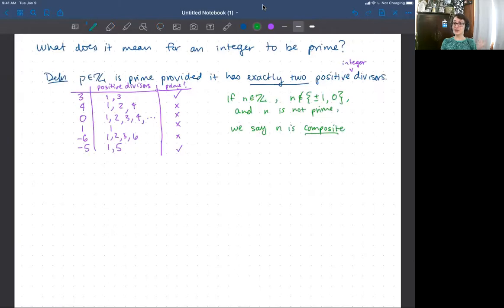But as you know, definitions are sometimes good for proving things, but not always good for doing computations or like figuring out, is it actually prime? So here are some other things that we could use to characterize what it means to be prime. When I say characterize, I mean these are going to be if and only if propositions.